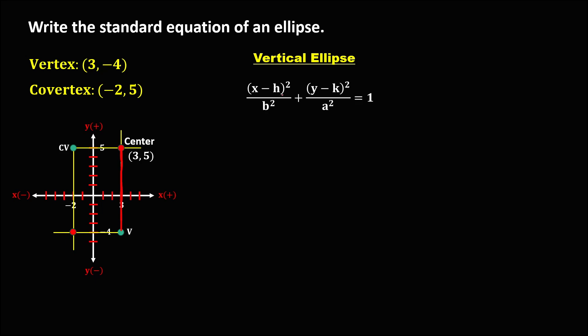We need to find the values for h, k, b, and a. For h and k, we use the center of the ellipse. So h is positive 3 and k is positive 5.